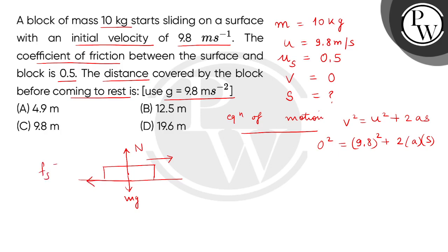That is Fs, which equals mu S multiplied by N. The driving force is MA. So MA equals mu S times Mg. M cancels out, then A equals mu S times g.